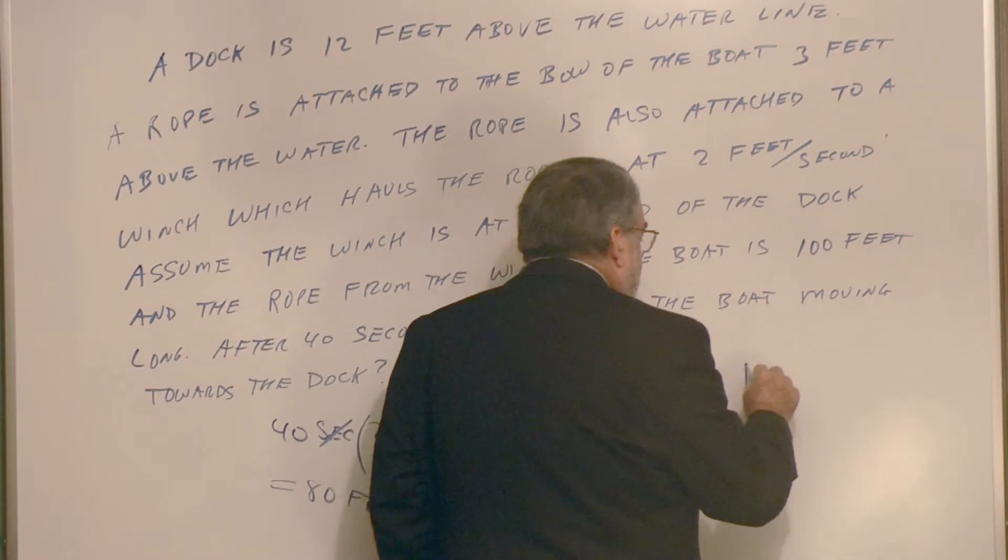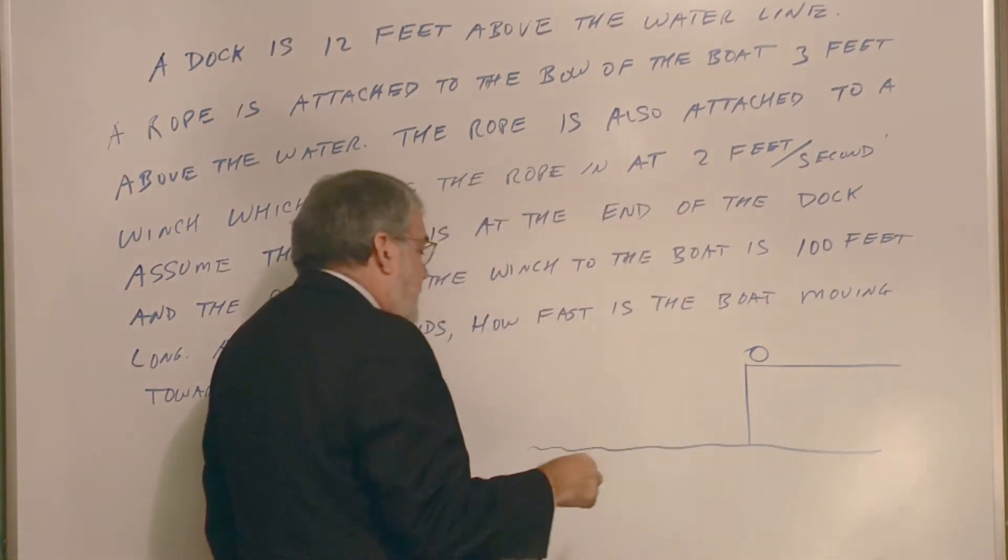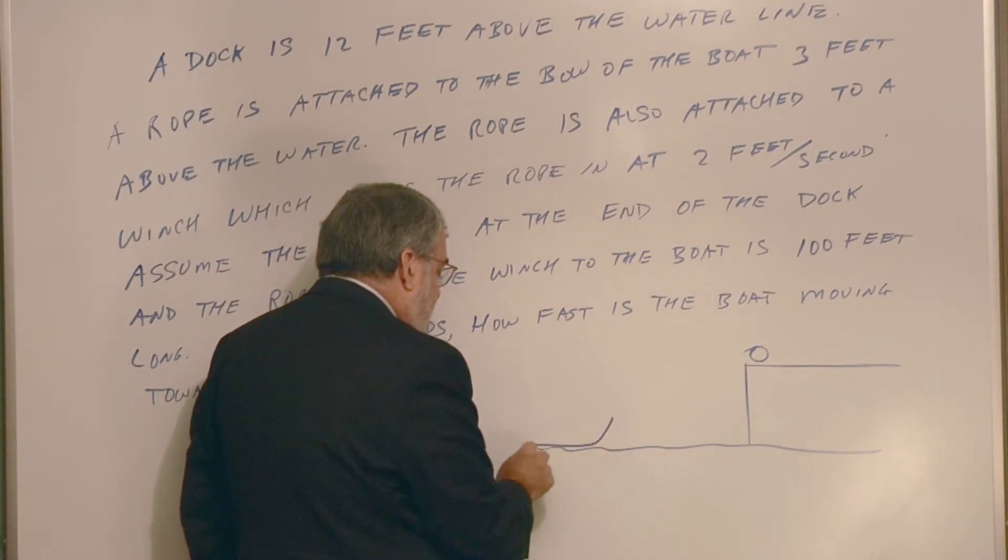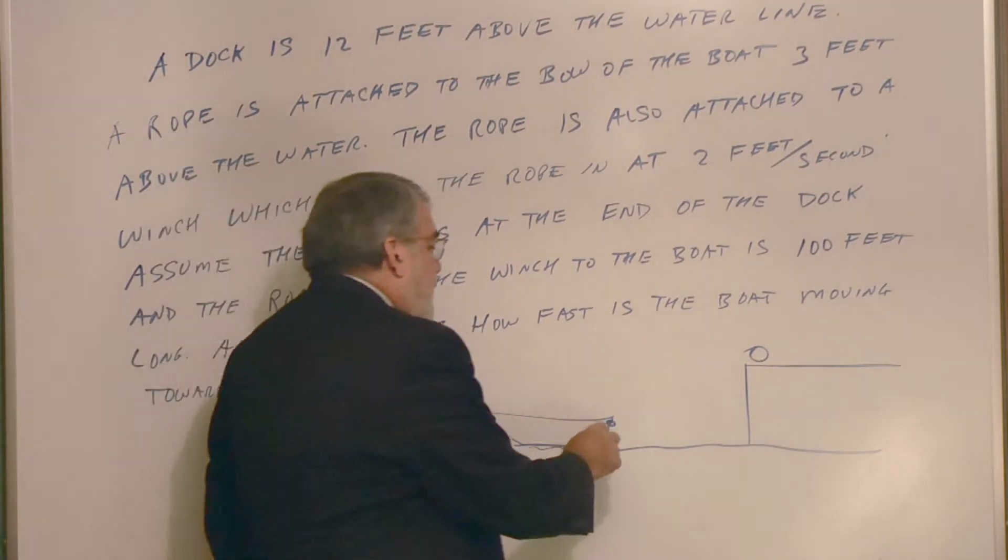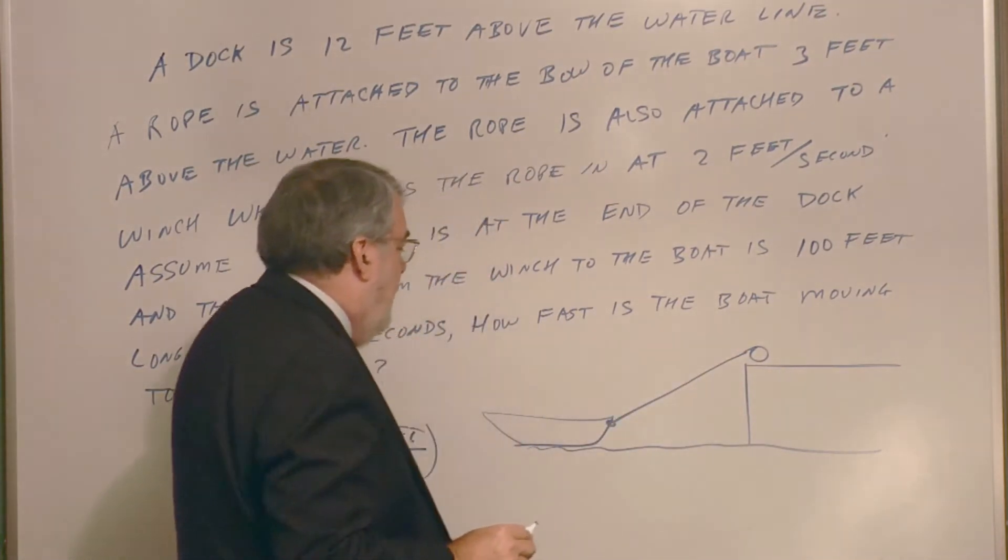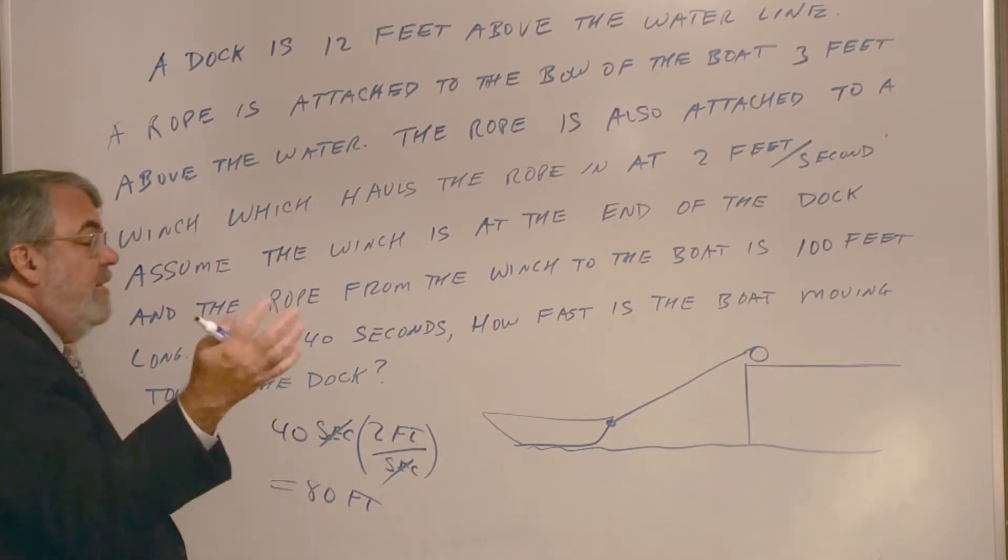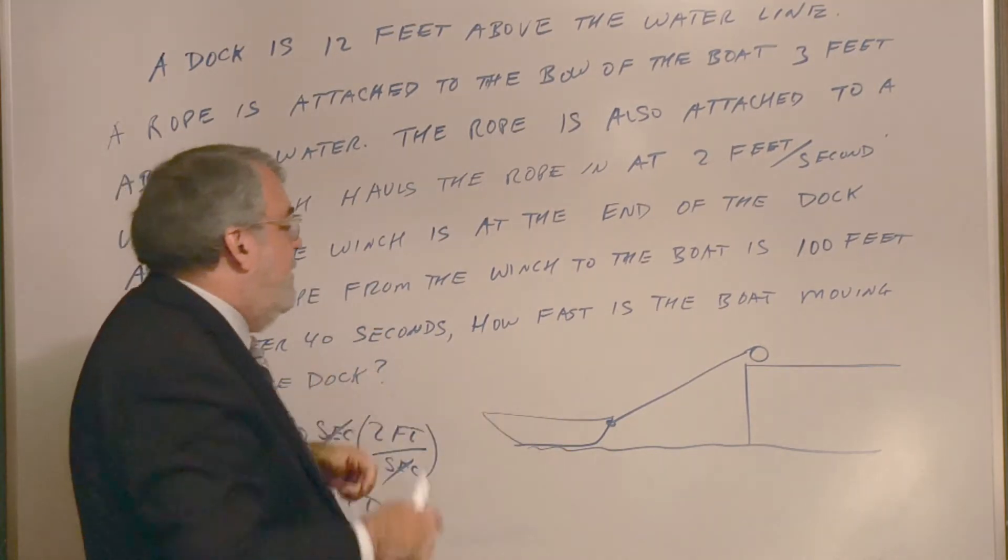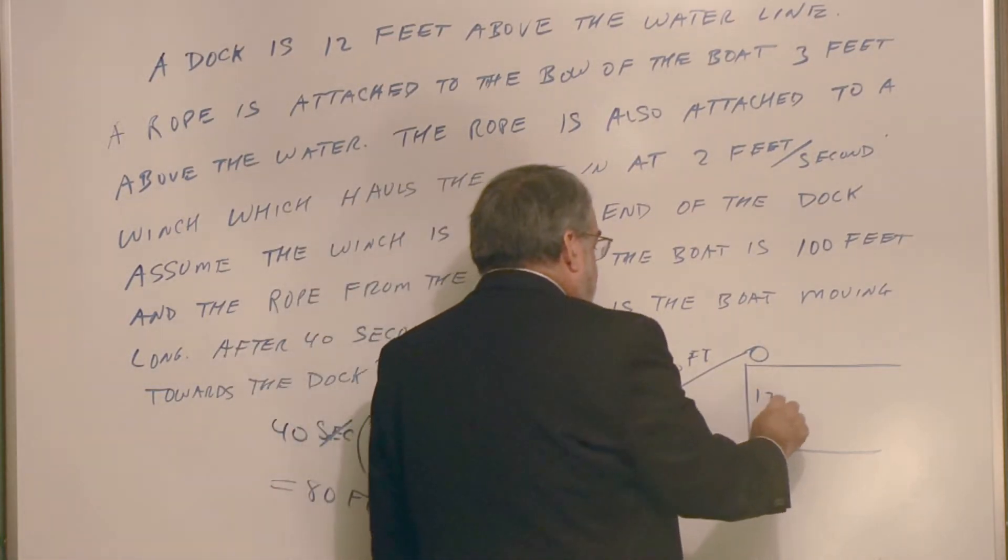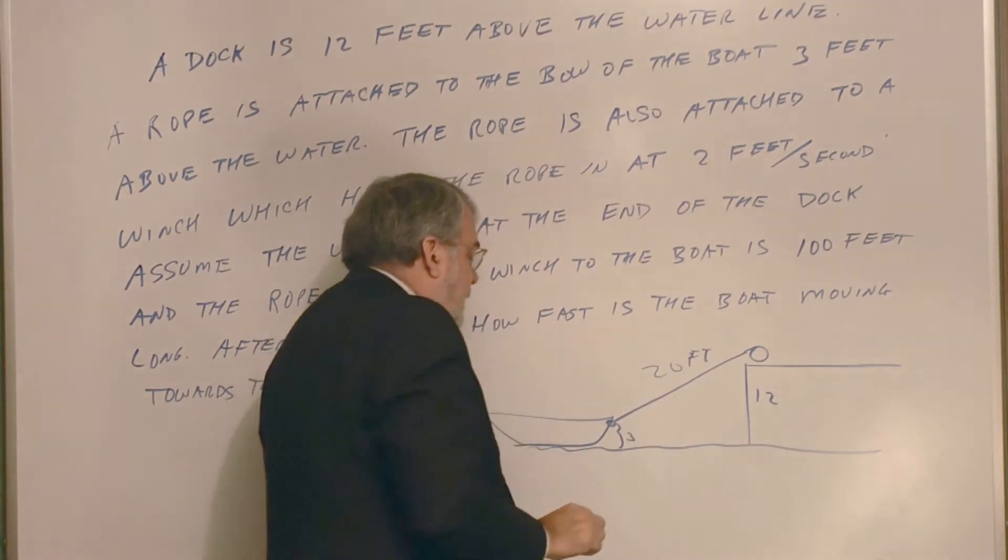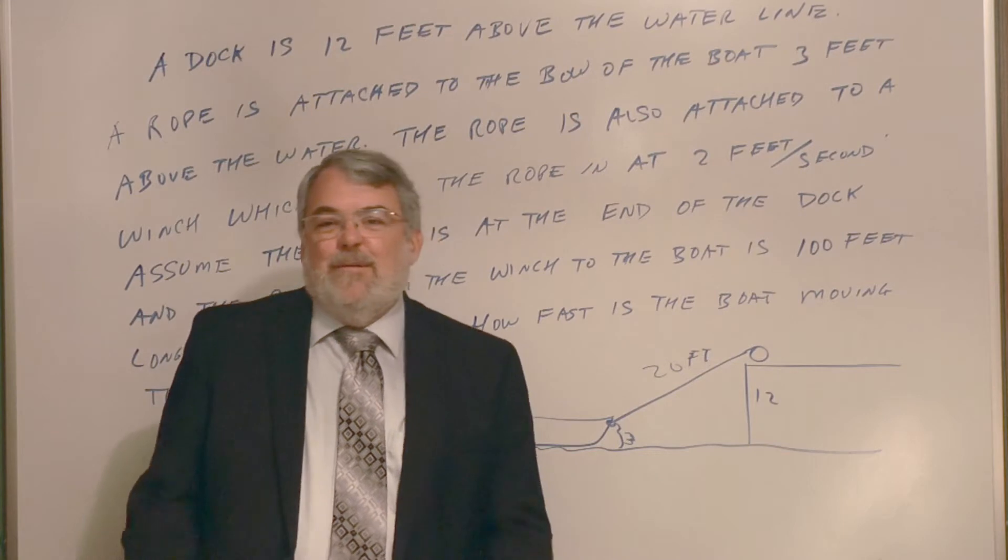So let's draw our diagram. Here's our dock. And here's the winch and the water line and the boat. And I'm a lousy artist. I mentioned that before. But here's our boat. And from the bow or from the boat is up here. This is three feet above the water line. So anyway, we have rope coming down to here.